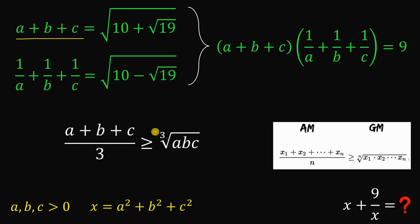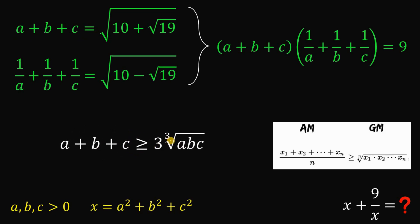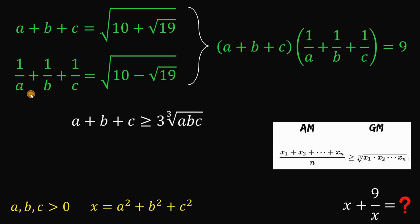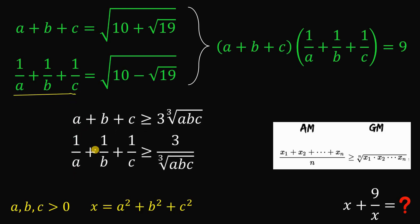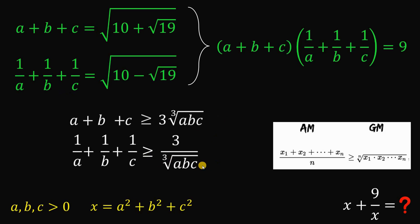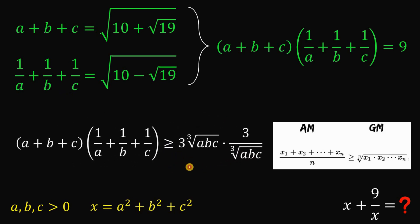Multiplying through by 3, we have A plus B plus C is greater than or equal to 3 times the cube root of ABC. Now, let's apply the AM-GM inequality to the expression 1 over A plus 1 over B plus 1 over C. Doing that, we get that 1 over A plus 1 over B plus 1 over C is greater than or equal to 3 over the cube root of ABC. If we multiply these two results, the cube root of ABC terms cancel out — it's just 1.